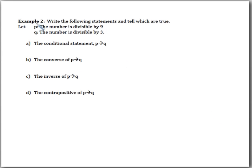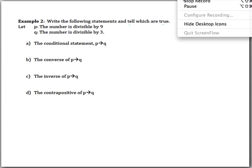I want you to try example two on your own. You're given P is 'the number is divisible by 3' and Q is 'the number is divisible by 3.' Write out the conditional statement, the converse, the inverse, and the contrapositive, then determine which of these are true. Pause the video, and come back when you're done to check your work.